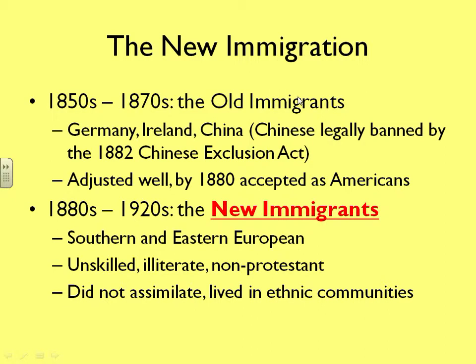Now the new immigrants pouring into these cities — we do call them the new immigrants. The old immigrants being the Germans, the Irish, and a few Chinese coming in, who were legally banned in 1882 with the Chinese Exclusion Act. The old immigrants, for the most part, adjusted well — especially the Germans — and by 1880 were really being accepted as Americans. With the new immigrants coming in from southern and eastern Europe, they're much less welcomed and not fitting in and assimilating to the extent that the Germans and Irish did. They tended to be very unskilled, illiterate, and non-Protestant — tending to be Catholics who would settle into their own communities.